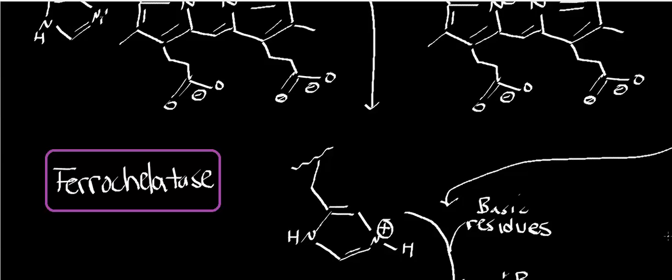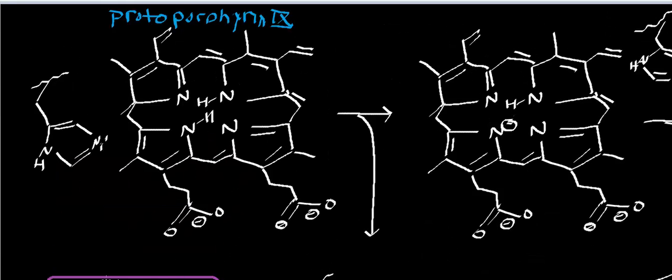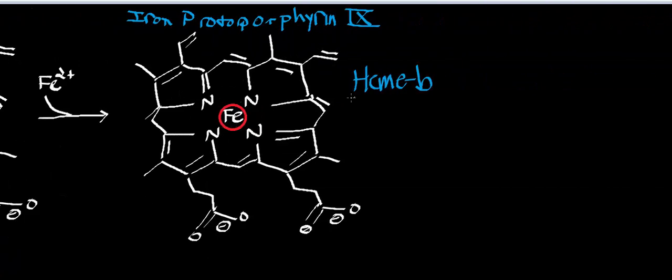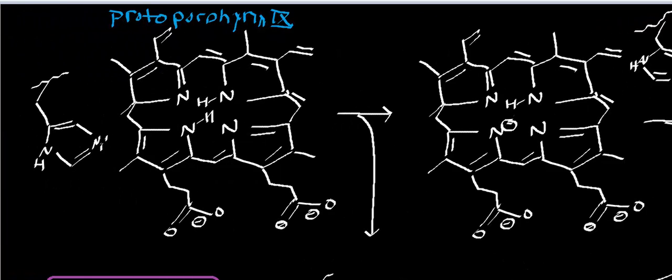Welcome back to the playlist on heme synthesis. This should be a fairly short video. We're going to talk about ferrochelatase, the terminal enzyme in heme B synthesis. Heme B is this molecule over here. The net reaction of ferrochelatase is: protoporphyrin 9, remove two protons, insert ferrous iron, and we get heme B.